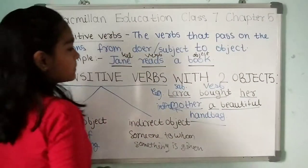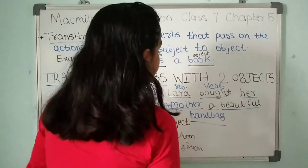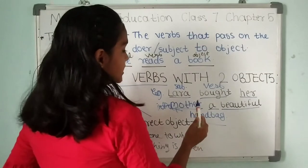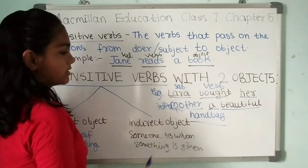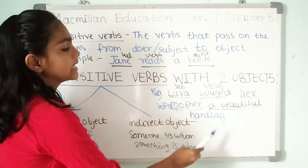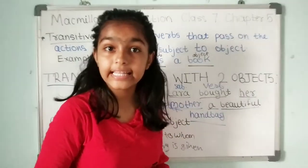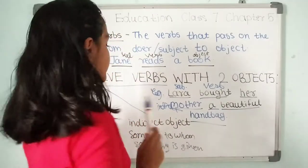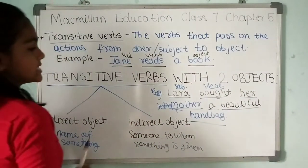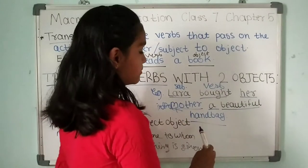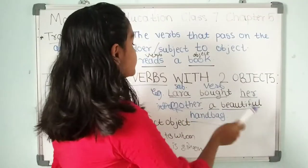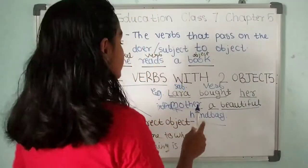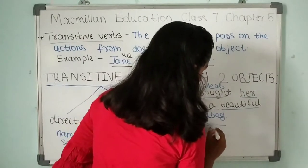Let's look at an example: 'Lara bought her mother a beautiful handbag.' Here, 'mother' is someone to whom something is given, so mother is called the indirect object. And 'handbag' is the name of something — what did Lara buy? A handbag — so handbag is called the direct object.